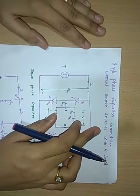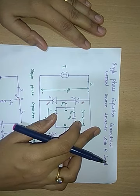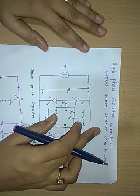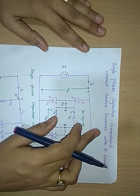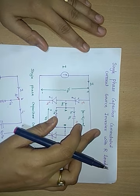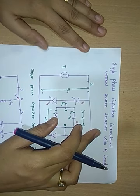In voltage source inverters, the input voltage is maintained constant and the amplitude of output voltage does not depend upon the nature of the load. But in the waveform of load current, its magnitude depends upon the nature of the load impedance. In current source inverters, the input current is constant but adjustable. The amplitude of output current is independent of the nature of the load, but the magnitude of output voltage depends upon the nature of the load impedance.